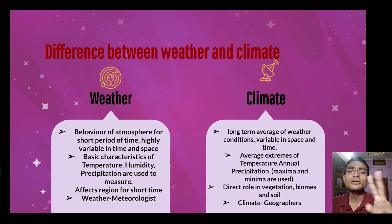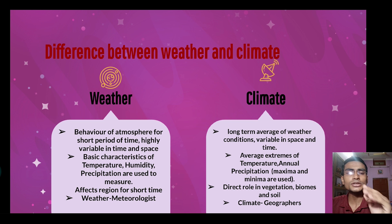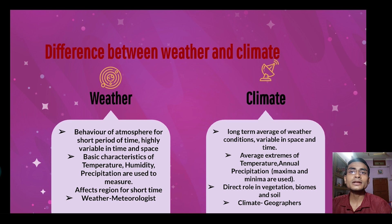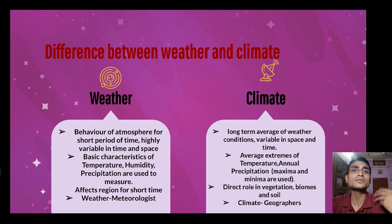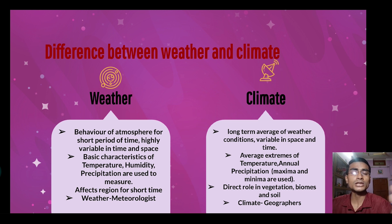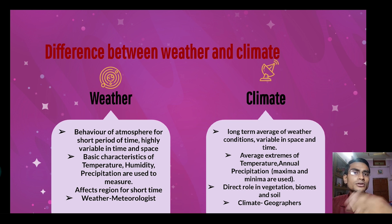The basic characteristics of weather are temperature, humidity, and precipitation — these are used to measure weather conditions. But in climate, we take extreme values — maximum, minimum, or average — and that is what we count in climate. Weather is measured by meteorologists, while climate is measured by geographers.